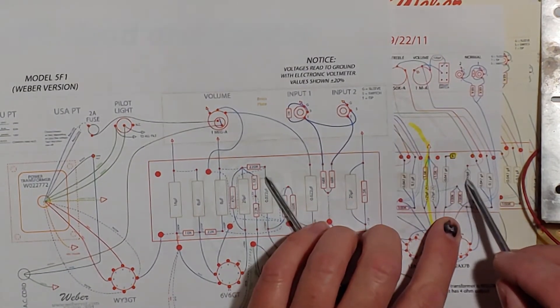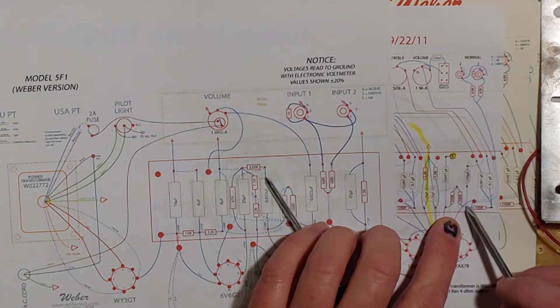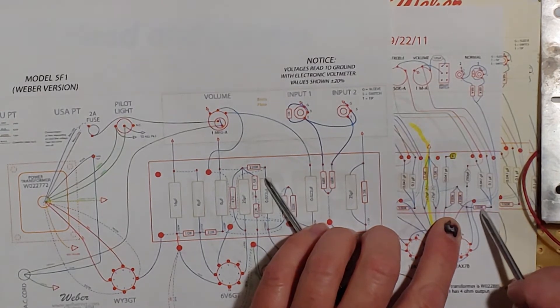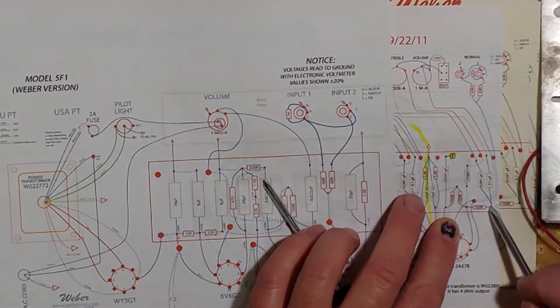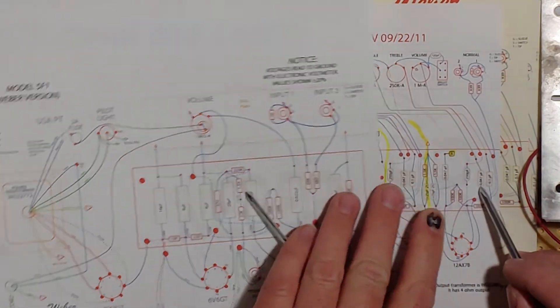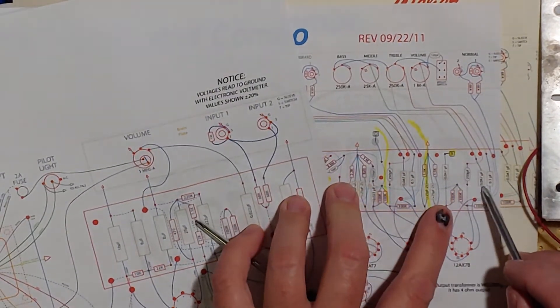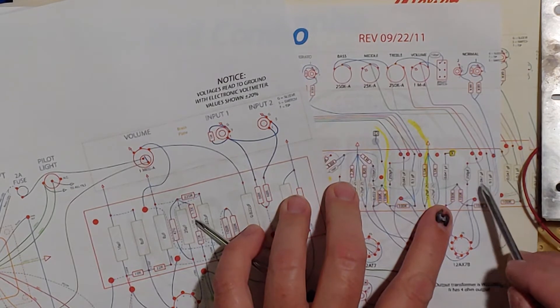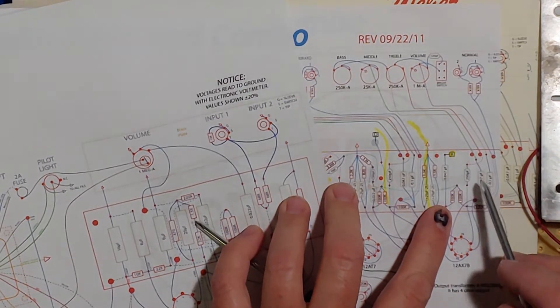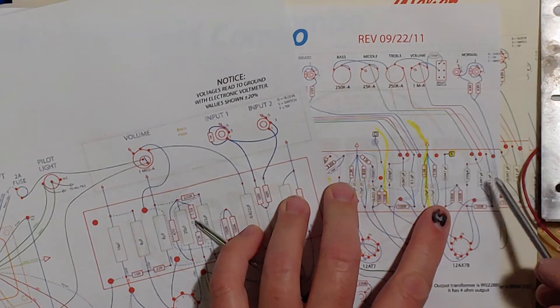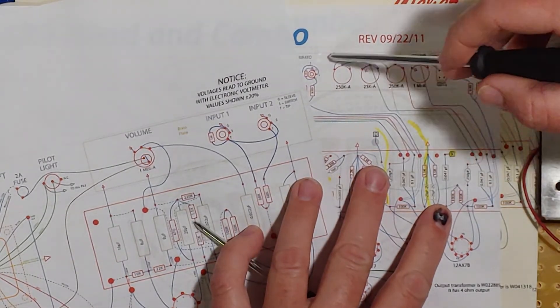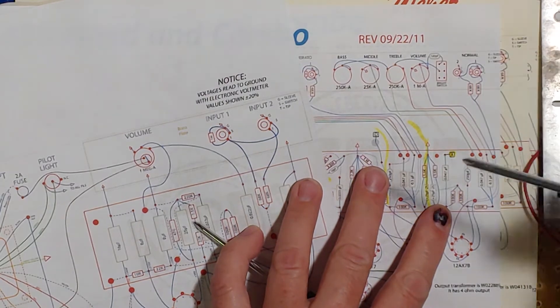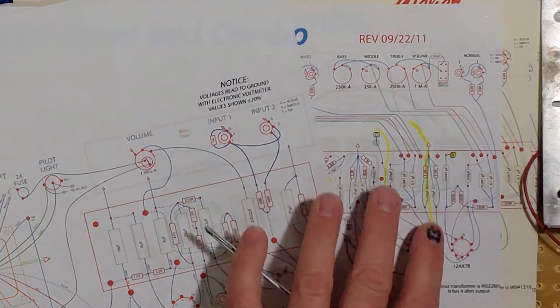You're grafting this 250 picofarad cap, you're grafting this 100k resistor and then from the 100k resistor you're grafting both of these capacitors on, the 0.047 uF and the 0.1 uF capacitors and they go up to these wires and you just follow these wires up and copy that whole tone stack. So that's all you do it's actually really simple.